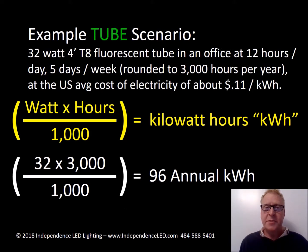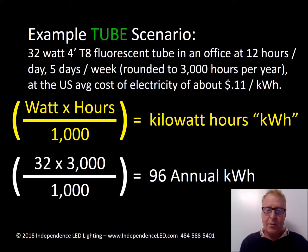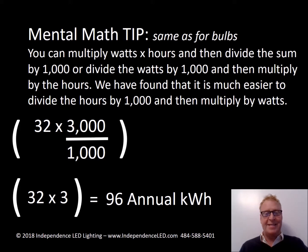Here's an example tube scenario: a 32 watt, very common four-foot T8 fluorescent tube — over two billion on American ceilings. At 12 hours in an office per day, five days per week, rounded to 3,000 hours. 32 watts times 3,000 divided by 1,000 equals 96 kilowatt hours. This is that same mental math tip where dividing the 1,000 into the hours versus the total sum makes it much faster.